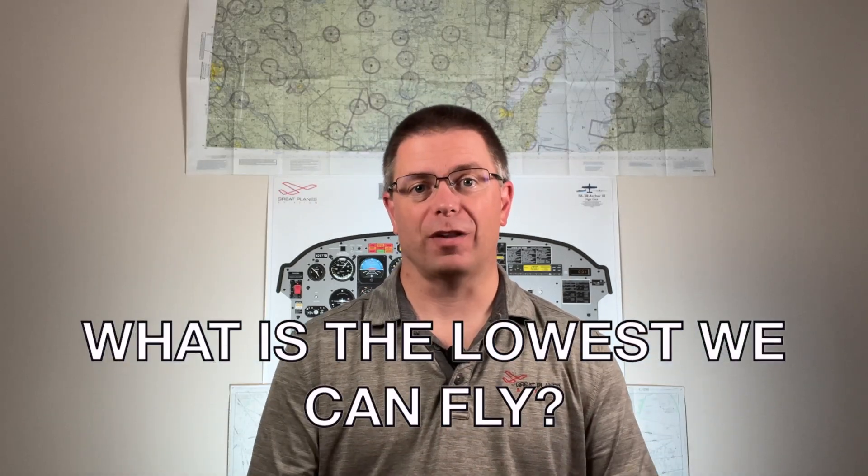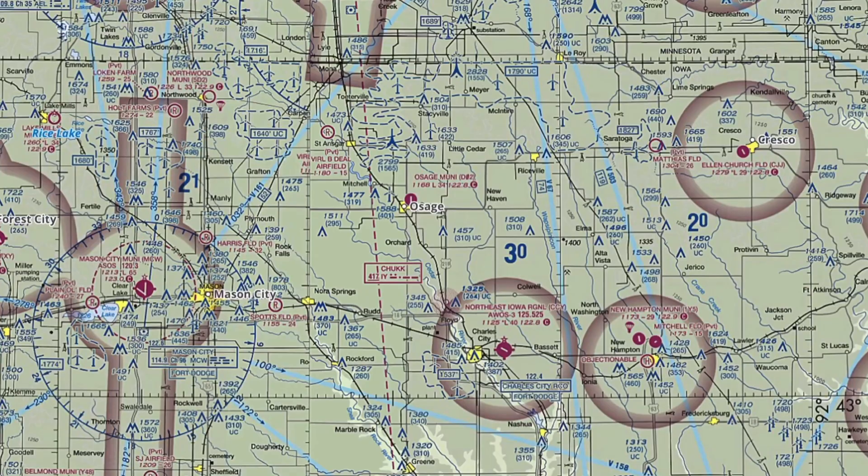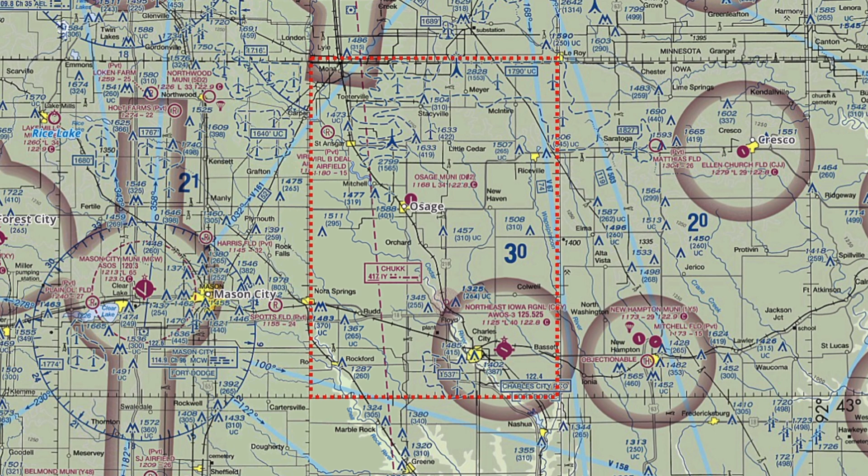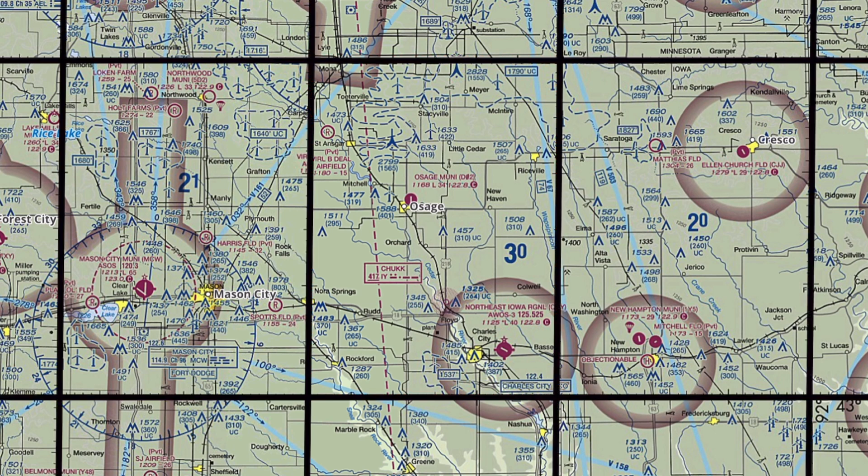Question 1: What is the lowest we can fly? We'll start with the minimum elevation figures, or MEFs. The MEFs are the blue numbers on your sectional chart inside each quadrangle formed by the lines of latitude and the lines of longitude. Because of the way MEFs are calculated, if your charts are current and you stay above that number, you should have at least 100 feet of obstacle clearance. However, 100 feet doesn't leave much room for error. So if your route is over congested areas, I'd recommend staying at least 1,000 feet above the MEF. If your route is over non-congested areas, we'll only add 500 feet. Doing this will ensure compliance with 14 CFR 91.119 and provide a safety buffer.